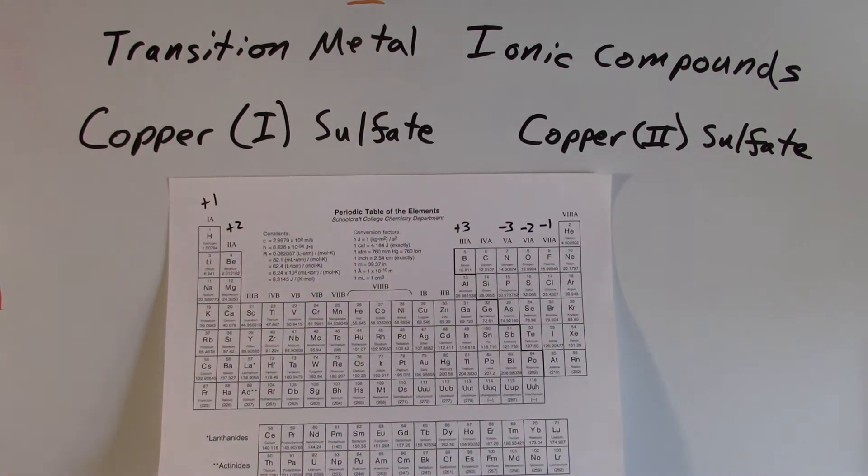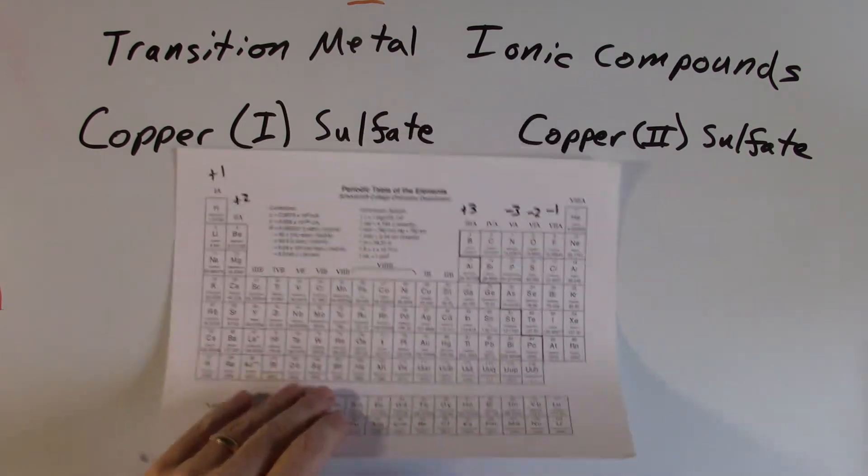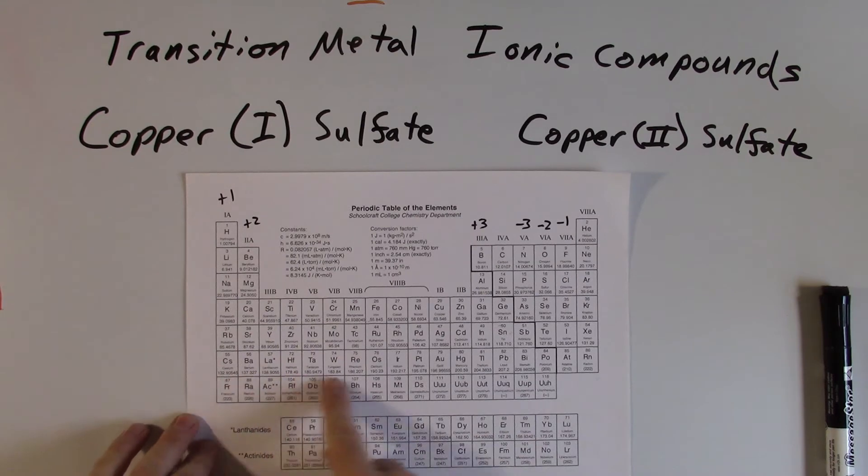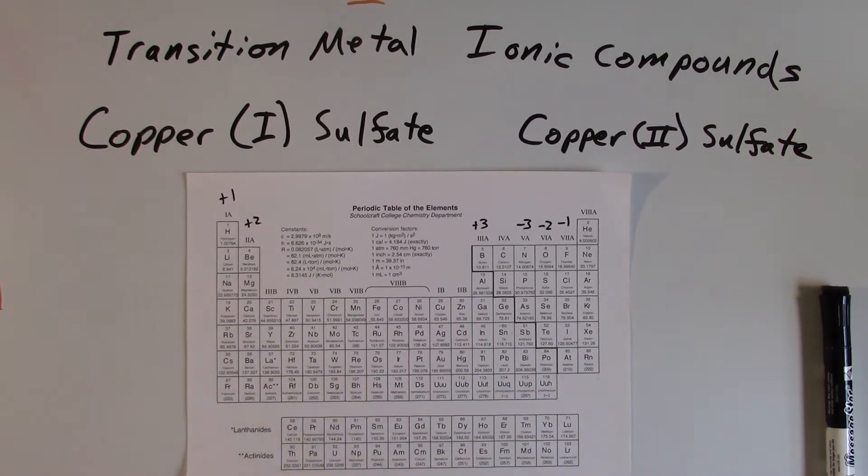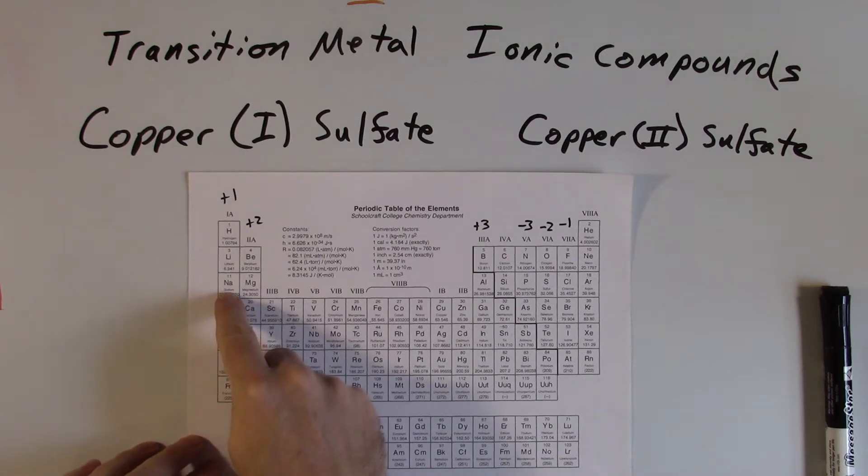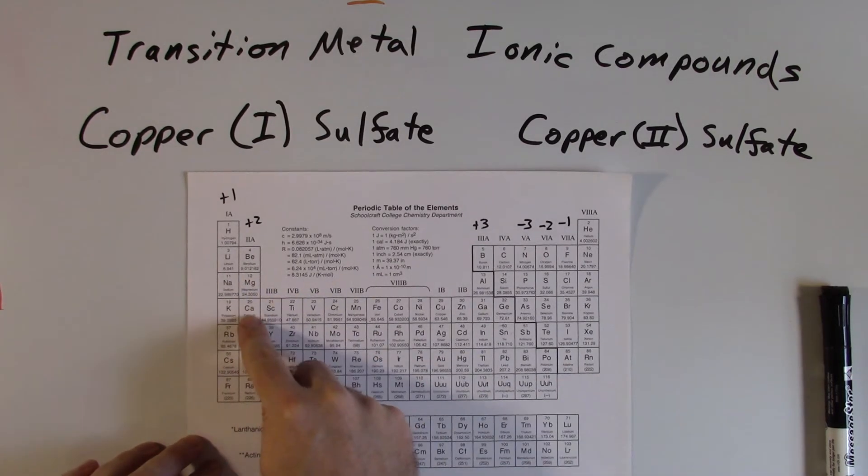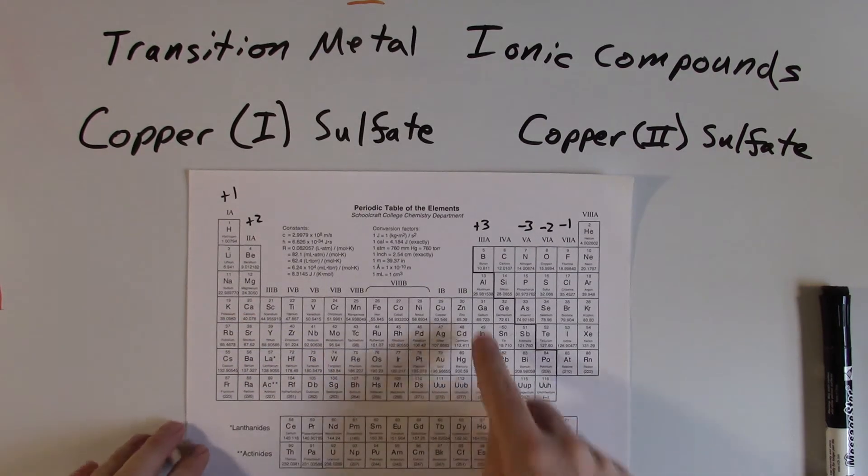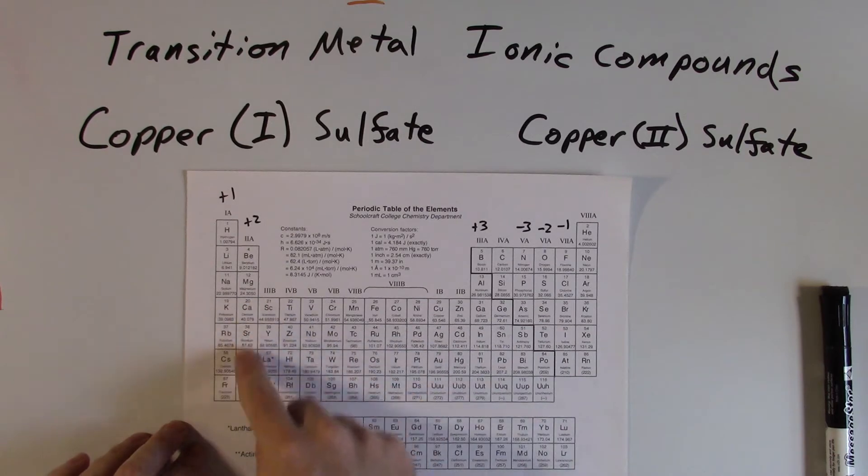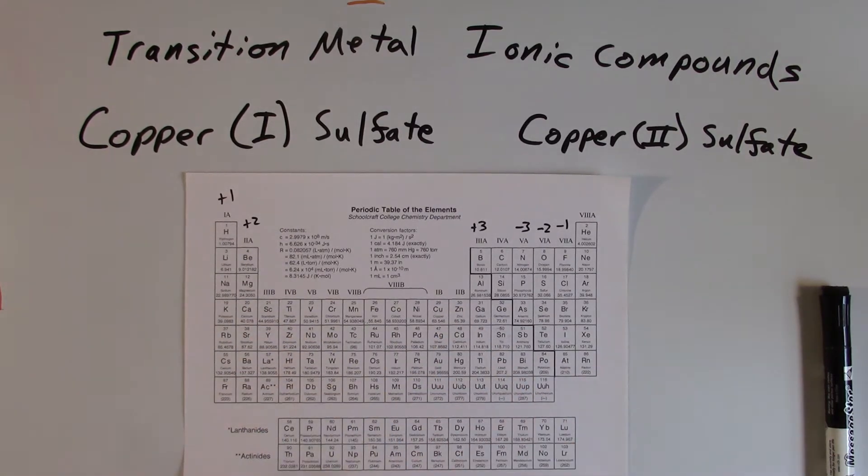But the problem with the transition elements, those are the ones in the center here, they don't always have the same charge, unlike things like sodium. Sodium, when it's in a compound, it's always got a plus one charge. Or calcium, when it's in a compound, it's always going to have a plus two charge. Or aluminum, when it's in a compound, it's always going to have a plus three charge. But many of the transition elements have more than one possible charge.